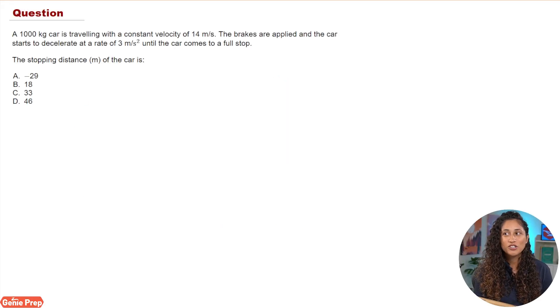A 1000 kg car is traveling with a constant velocity of 14 meters per second. The brakes are applied and the car starts to decelerate at a rate of 3 meters per second squared until the car comes to a full stop. We want to determine the stopping distance of the car, which means the distance from when the car starts to decelerate to when it comes to a full stop.